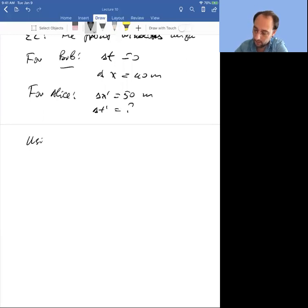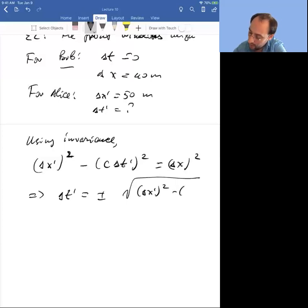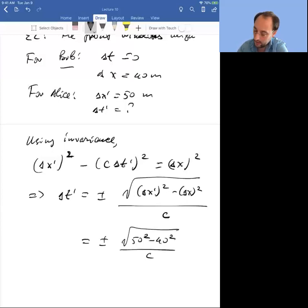Substitute it into the invariance and you can just find out delta t prime. So using invariance, we have delta x prime squared minus c delta t prime squared equals delta x squared, because delta t equals 0. Therefore, delta t prime equals plus or minus the square root of delta x prime squared minus delta x squared divided by c.